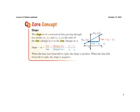First, we're going to talk about slope. The slope of a non-vertical line passing through two points — which we refer to as (x₁, y₁) and (x₂, y₂) — is the ratio of rise, which is our change in y, to the run, which is the change in the x-coordinate. Our equation is the change in y over the change in x.